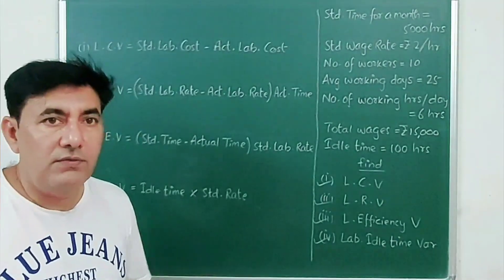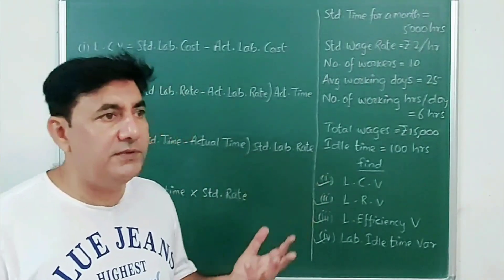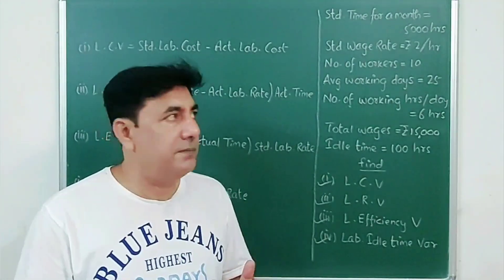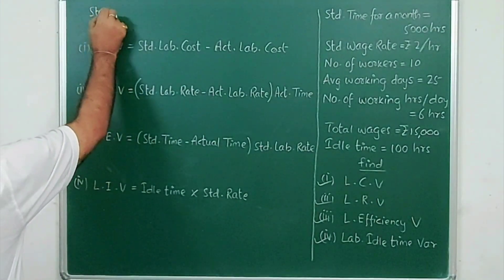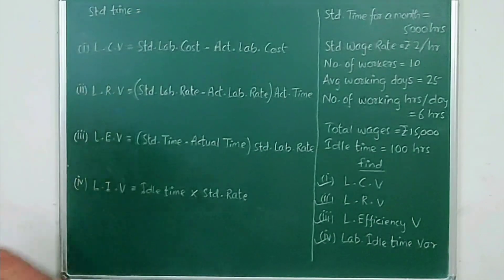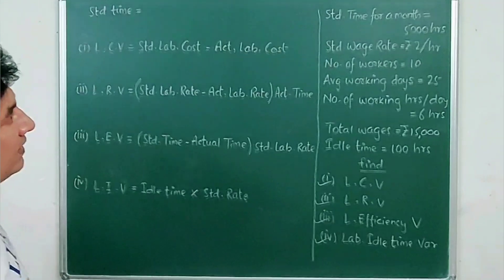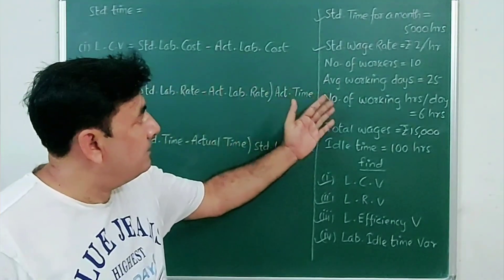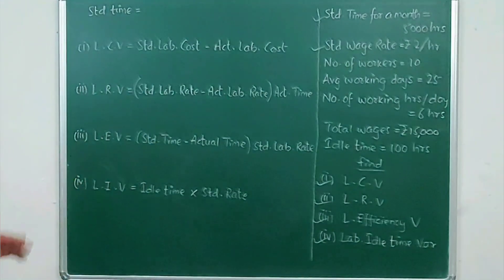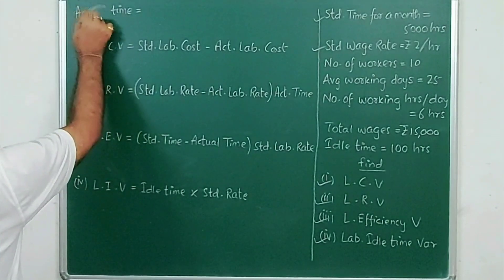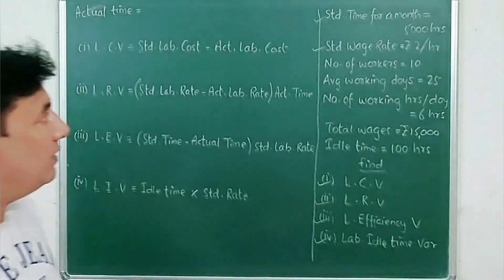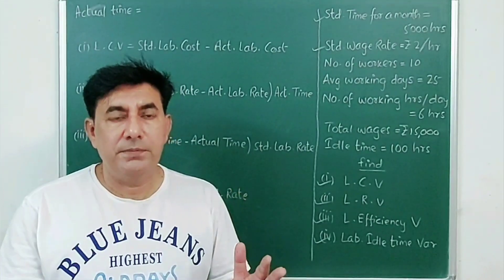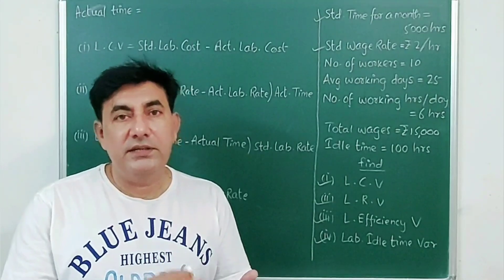To solve variance analysis you must have both standards and actuals. Standard time (5000 hours) and standard wage rate are given, but actuals are not directly given, so you need to find actual wage rate and actual time. To find actual time: number of hours into number of days into number of workers — it is that simple.